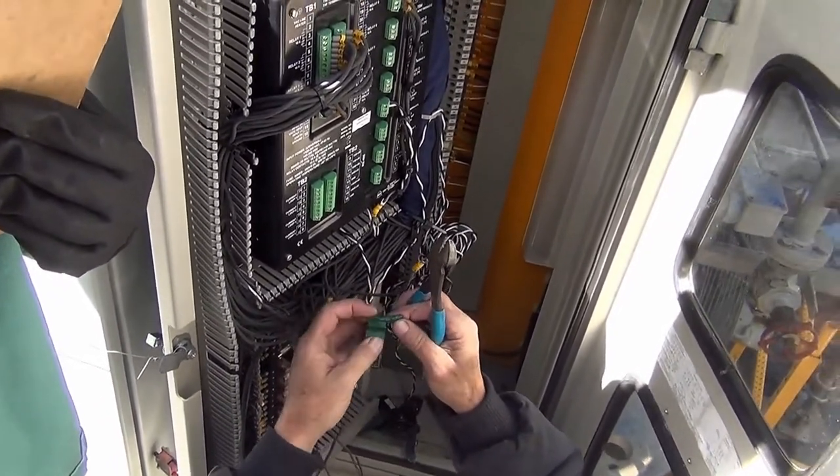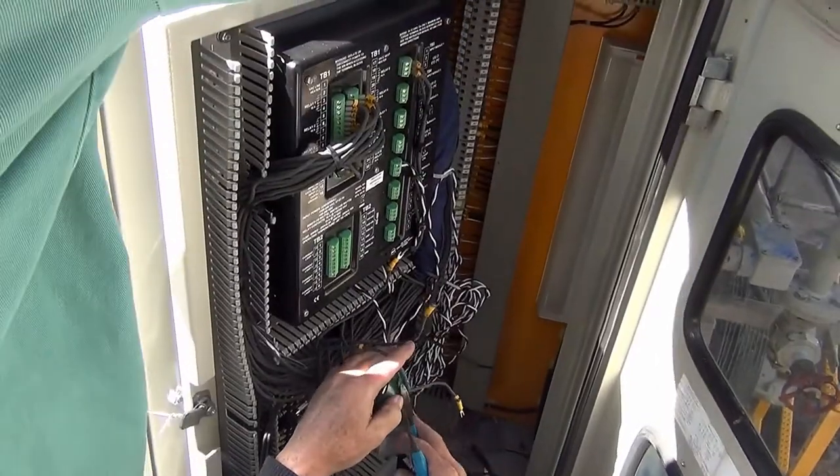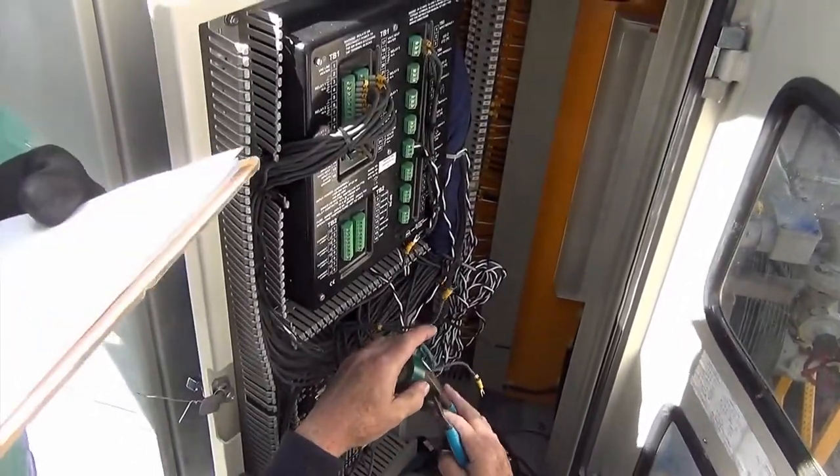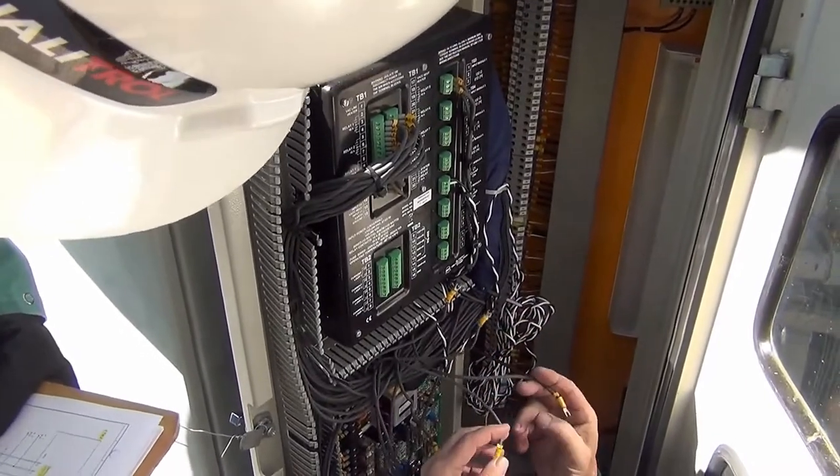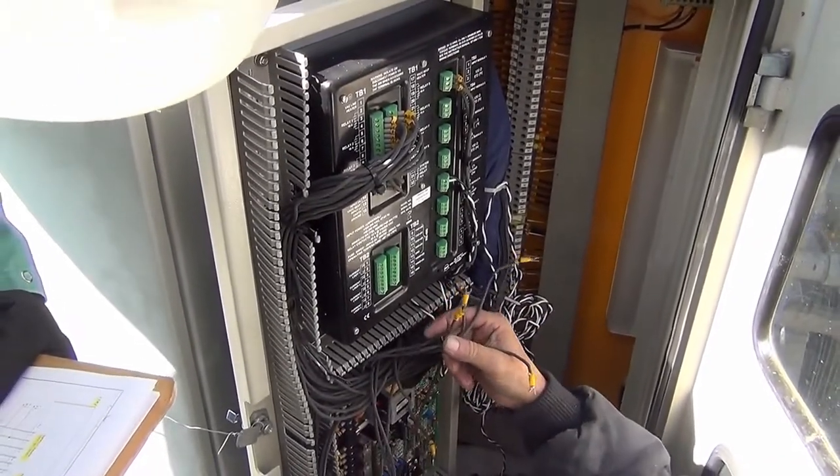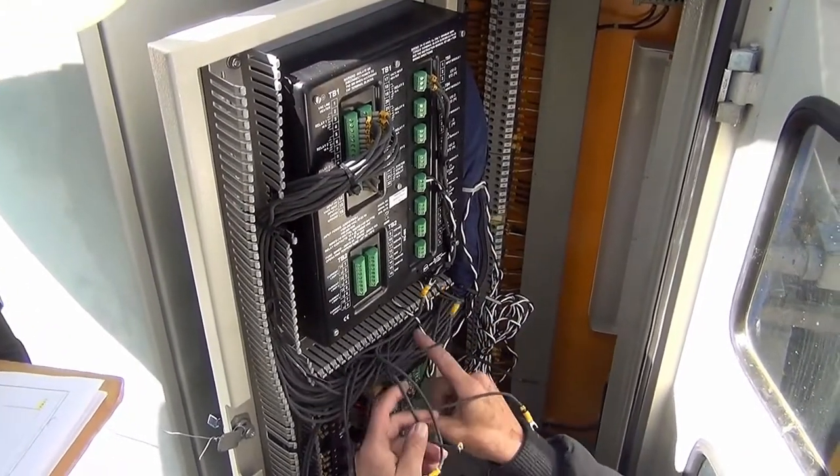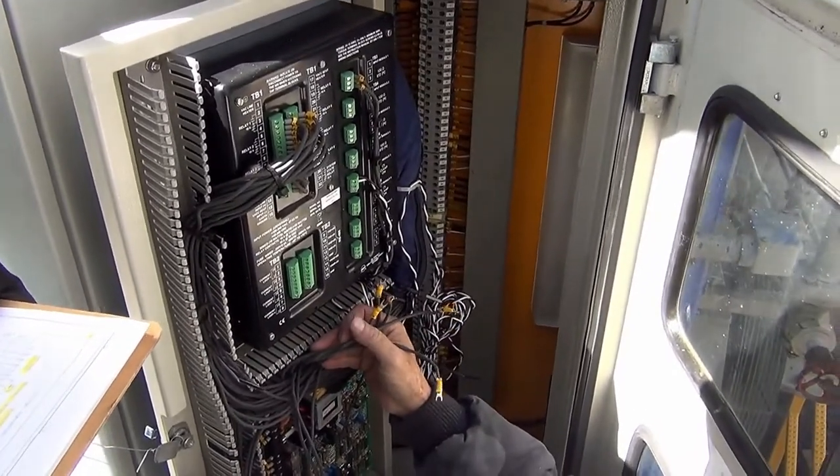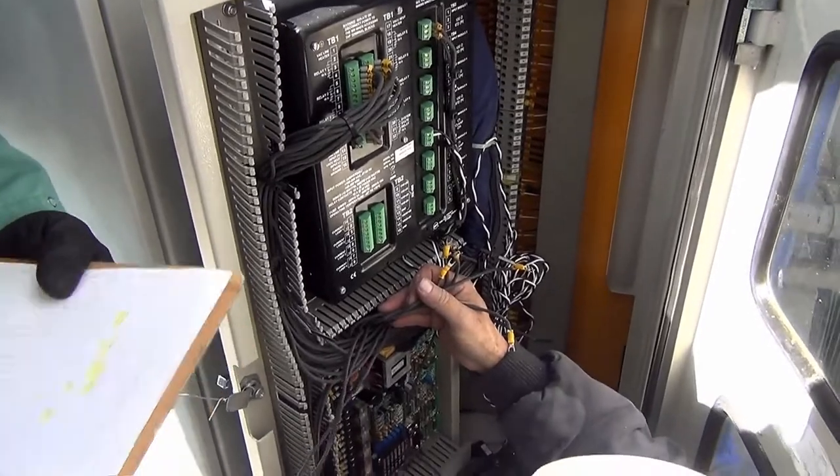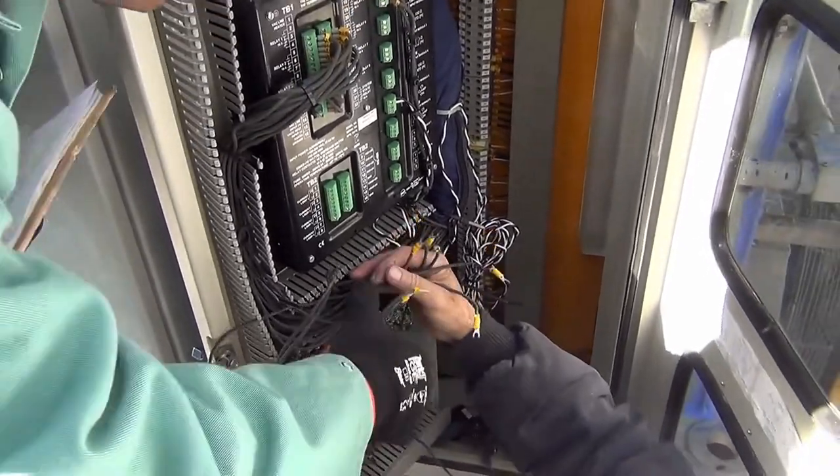If you have any analog output loops that you would like to connect and make it communicate with your SCADA system, you can use terminal TB2, terminals 1 through 8, to utilize any of the four output loops that the 509 ITM comes with. You can change the set points and the control signal of these output loops using the remote ITM software.